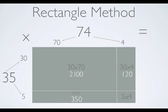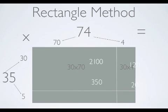5 times 4 is a math fact all on its own. We should know that 5 times 4 is 20. Now, I have solved all of the products of my smaller rectangles. I still don't know what 35 times 74 is.